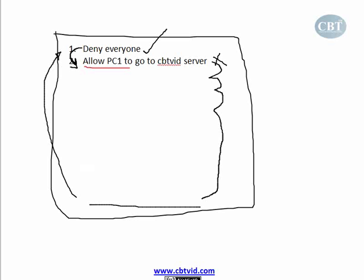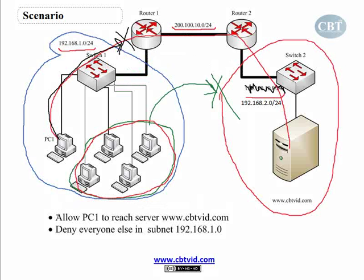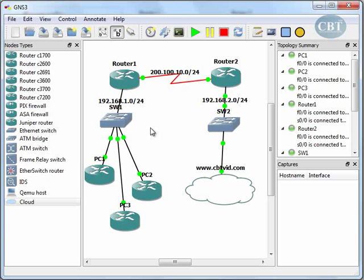So in our scenario: 'allow PC1 to reach the server' is the more specific rule because we're talking about one PC, and 'deny everyone else' is more general. The specific one must be first and the general one second.